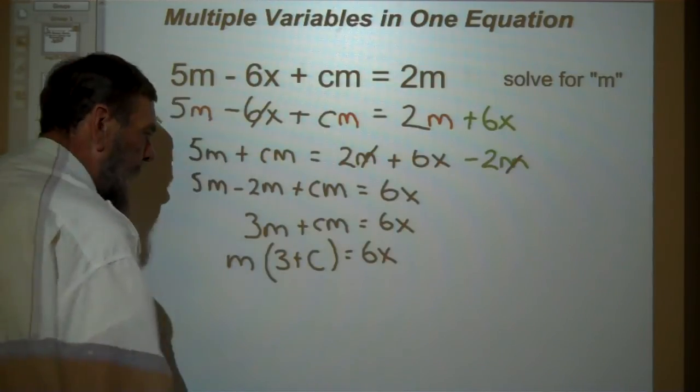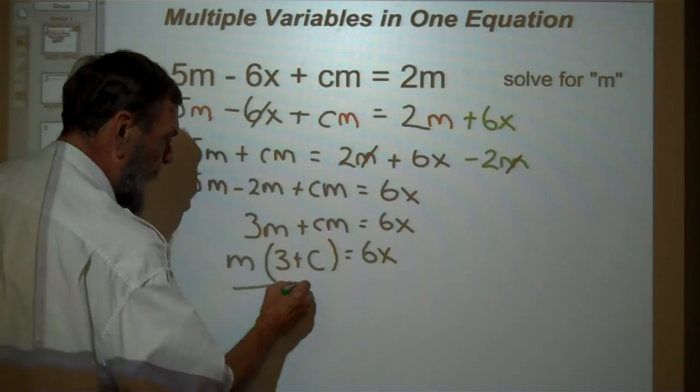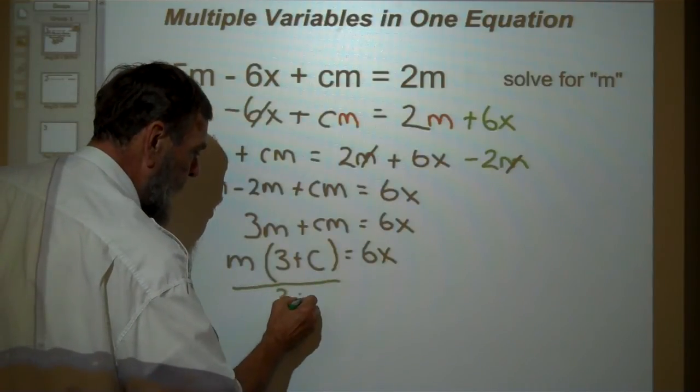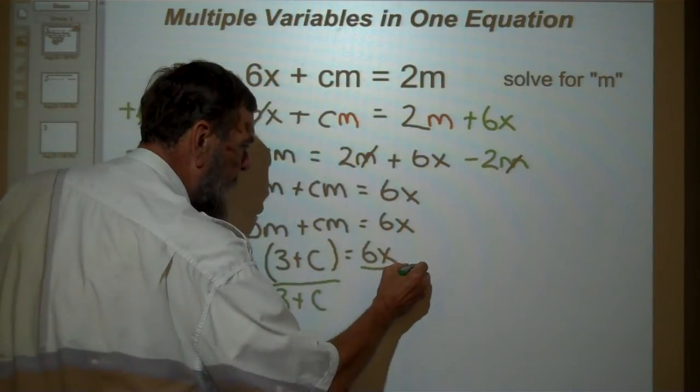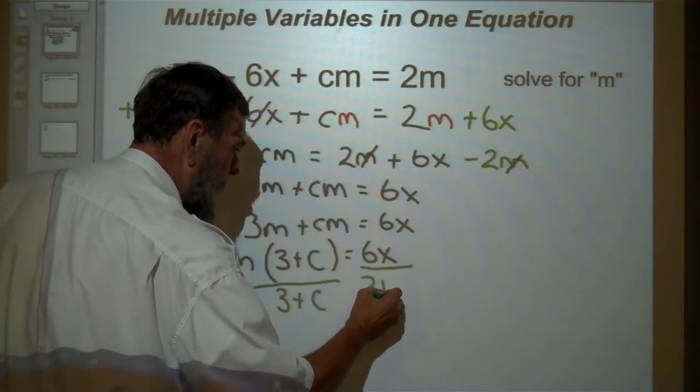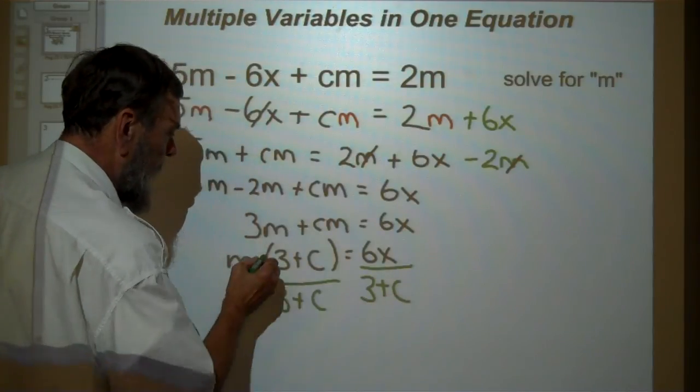Well, how do we get it by itself? We divide both sides by 3 plus c. Divide this side by 3 plus c. These cancel.